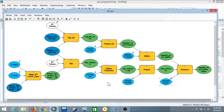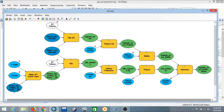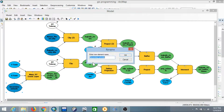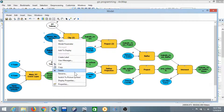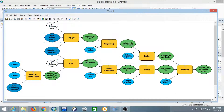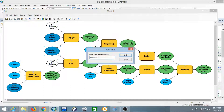Next, we need to rename the model elements — specifically the inputs and outputs. Right-click and select Rename. For example, rename the secondary schools input to 'Input Secondary Schools', then click OK. Rename the rivers layer to 'Input Kenya Rivers', and rename the county file to 'Input County File', then click OK.